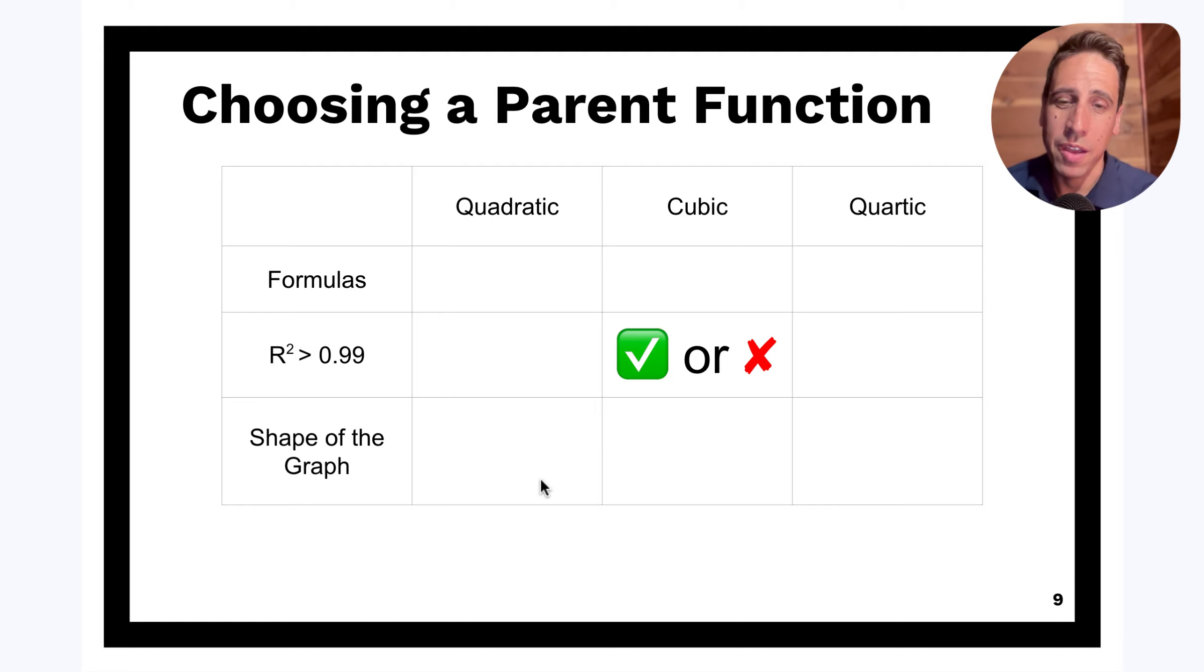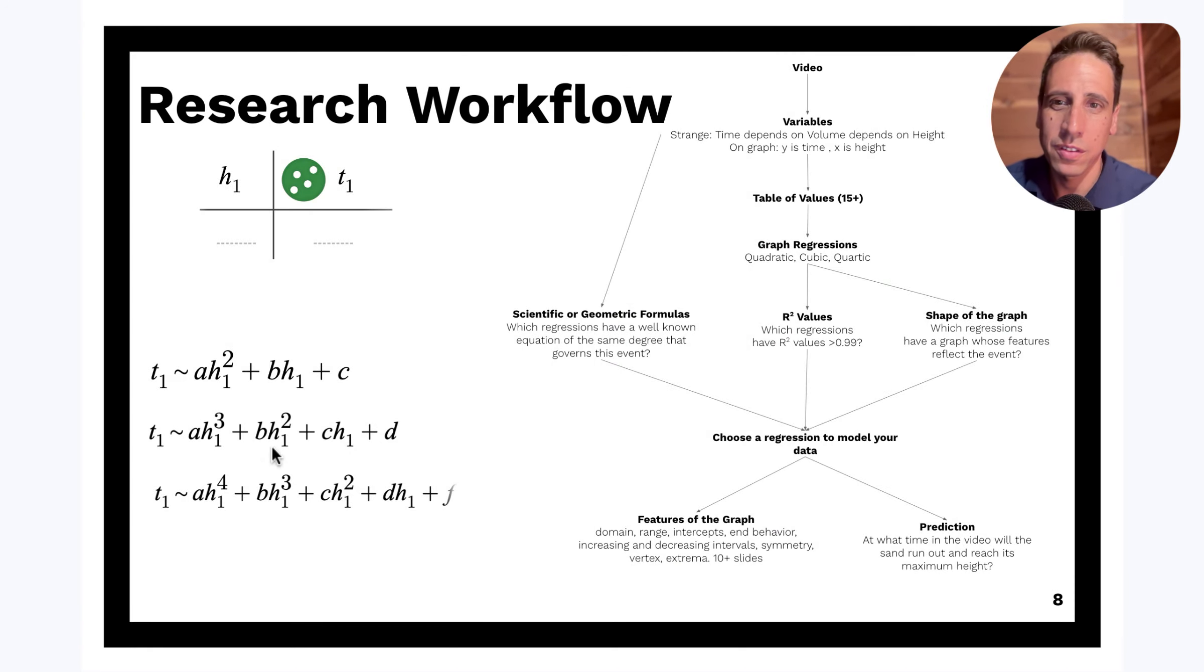And lastly, shape of the graph. You should be able to type in all three of these statements and look at the shape of the graph and know, and just know that as the volume increases and the height increases, so does the time. And if you get some sort of a curve out of one of these statements that doesn't indicate that, it doesn't line up with that, then you can discard that also.